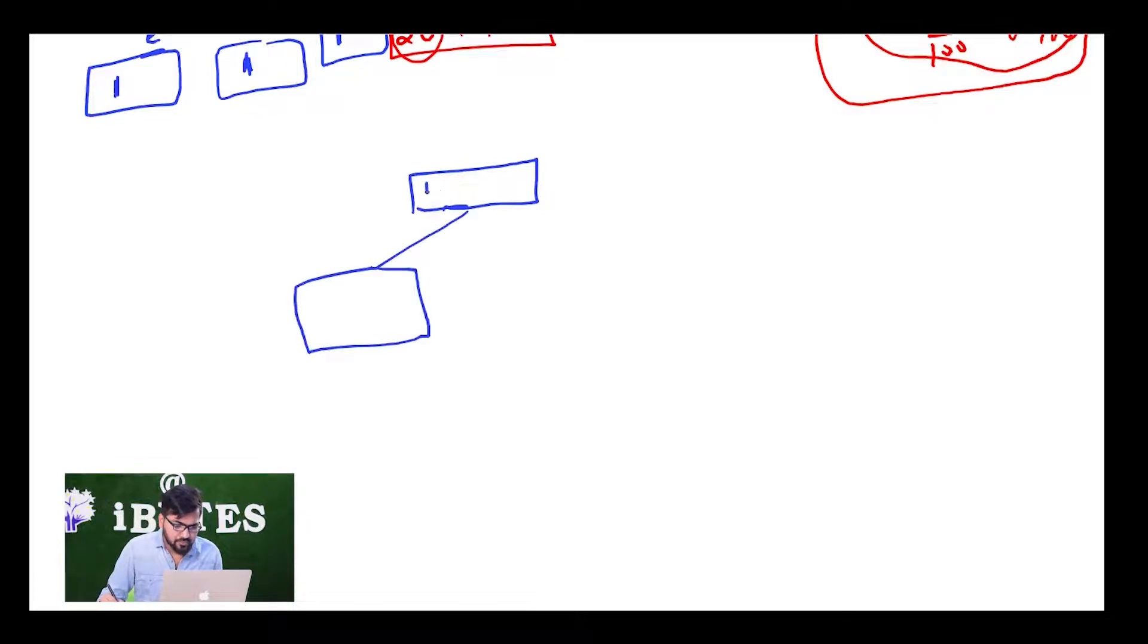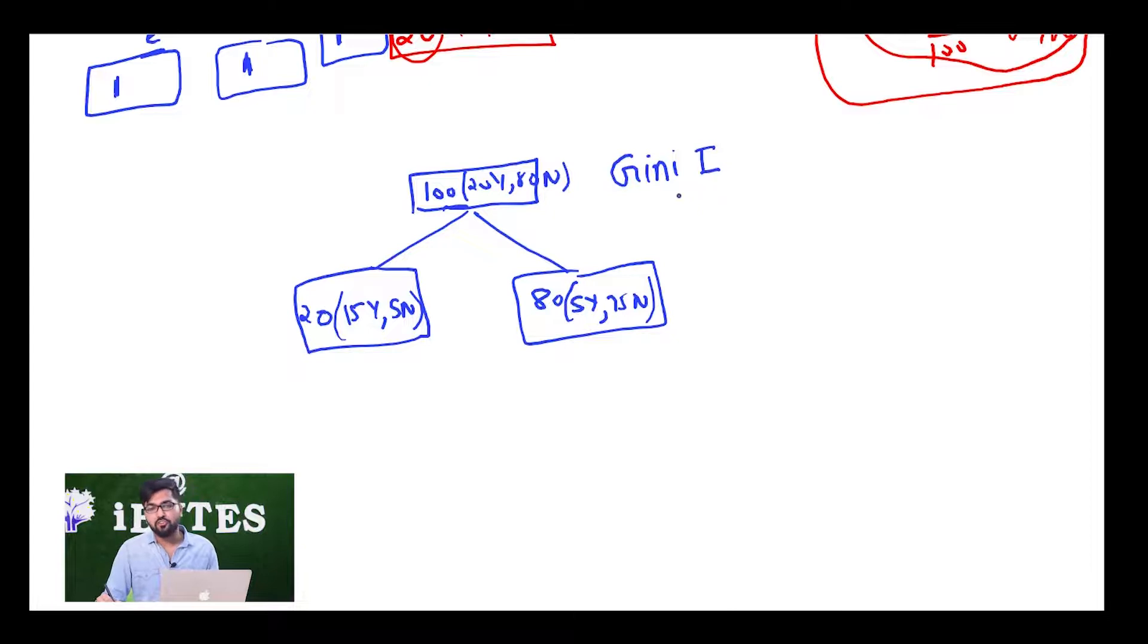Again I am going to take the same split: 20 yeses and 80 nos. So 20 has 15 yes and 5 no, and 80 has 5 yes and 75 no. Just like information gain, Gini index is also defined for a block. So Gini index for this block is 1 minus summation di square.